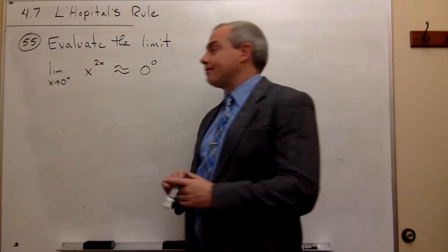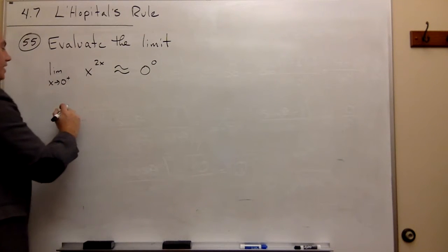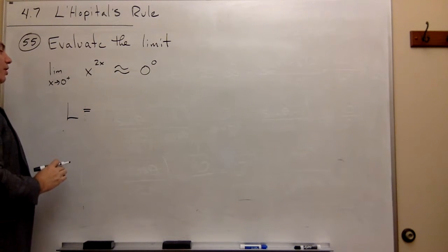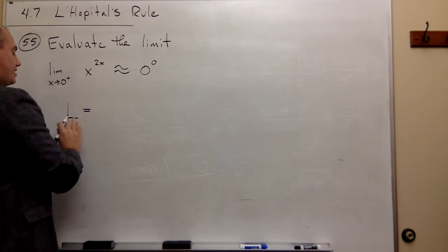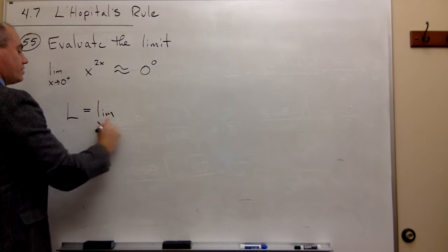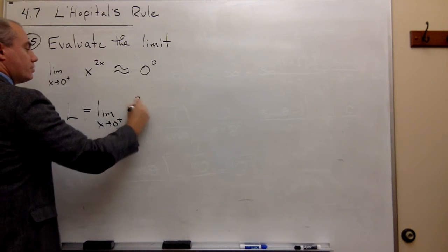So what I'm going to do here is set up this problem a little differently. I'm going to say, let's say that this limit equals something, and I'm going to call it L. So I'm going to say that L is equal to the limit as x goes to zero from the right of x to the 2x.